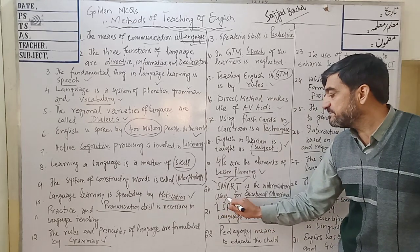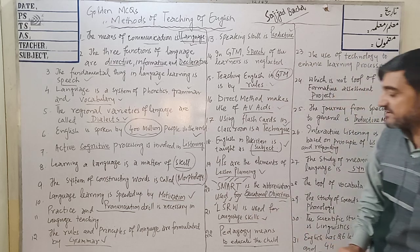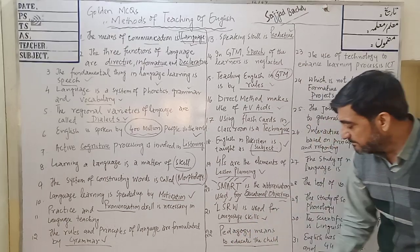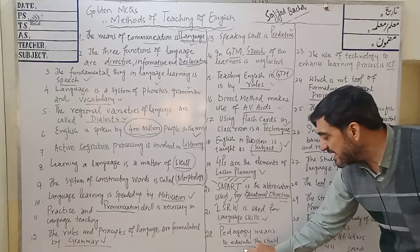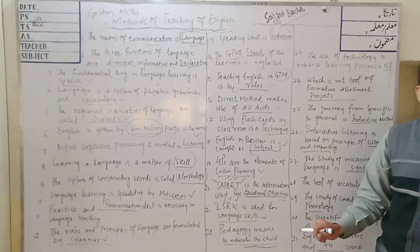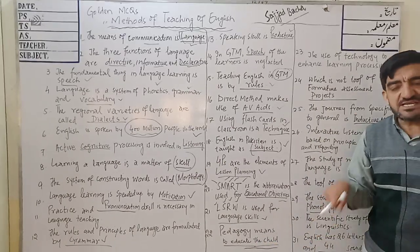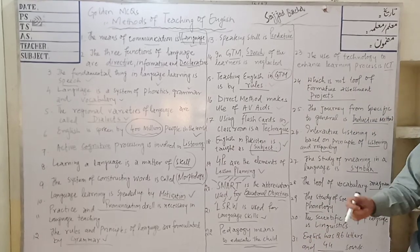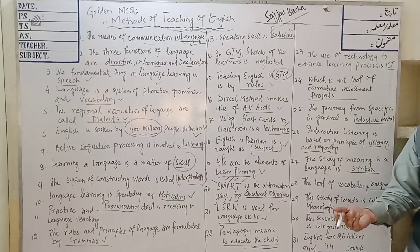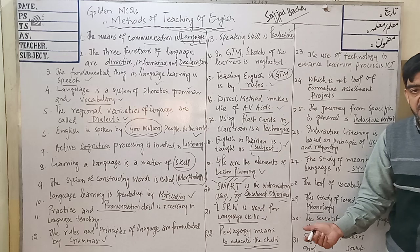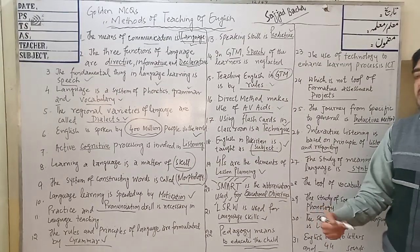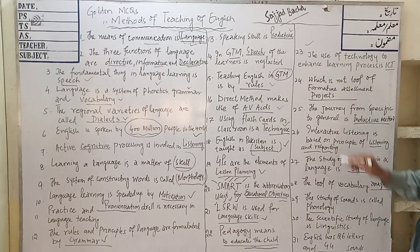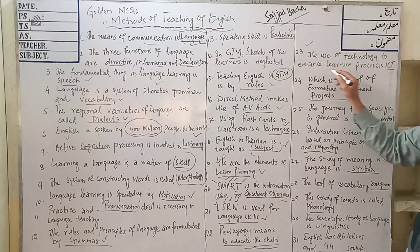MCQ 21: L-S-R-W is used for language skills — Listening, Speaking, Reading, and Writing. MCQ 22: Pedagogy is the method of teaching to children. Andragogy is the opposite of pedagogy, in which teaching is meant for adults.